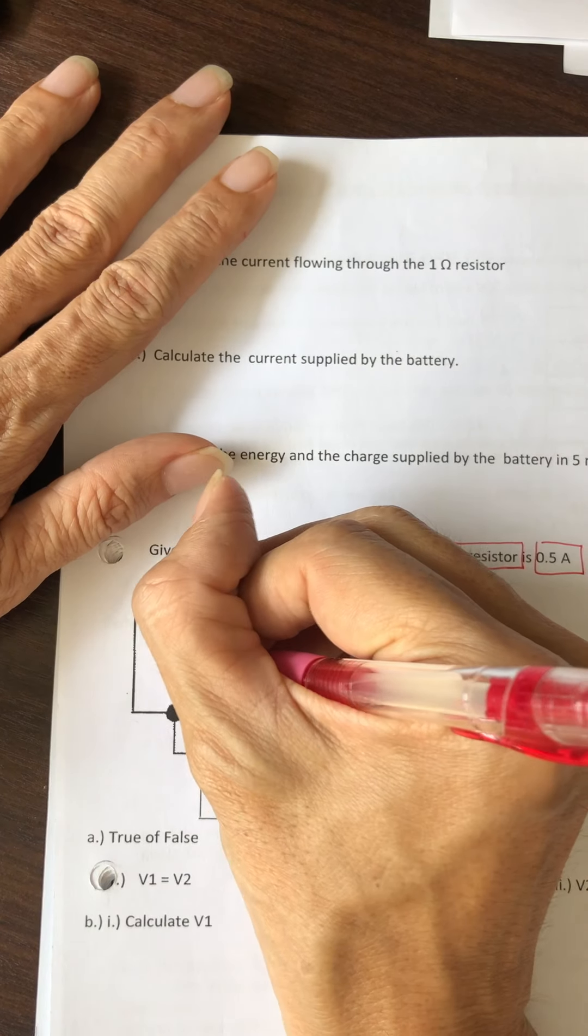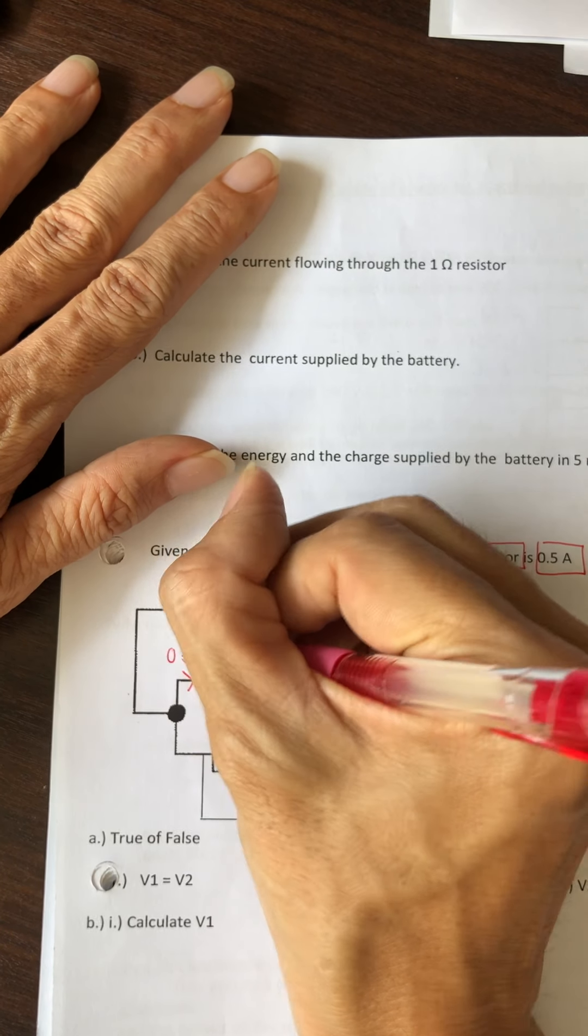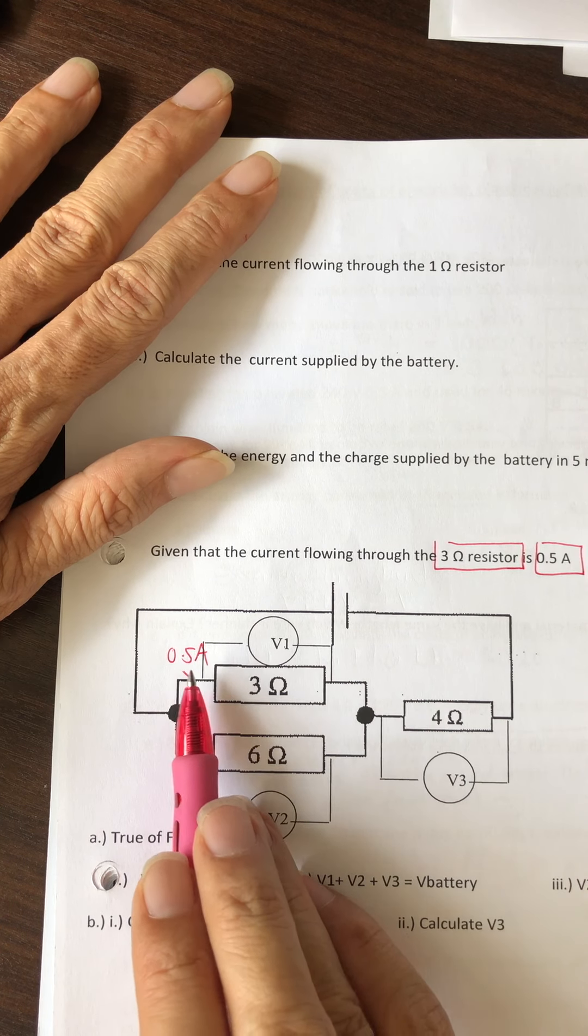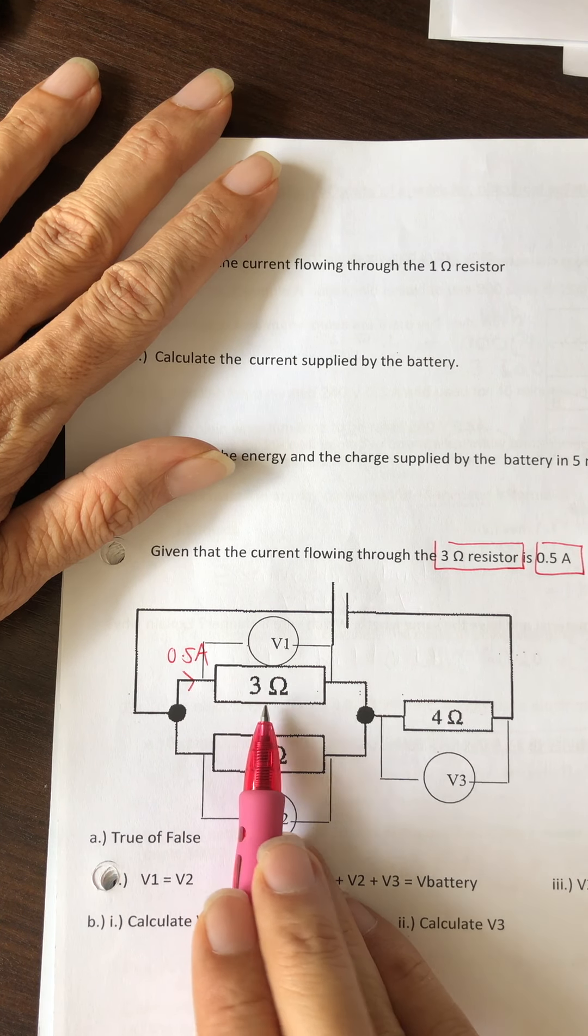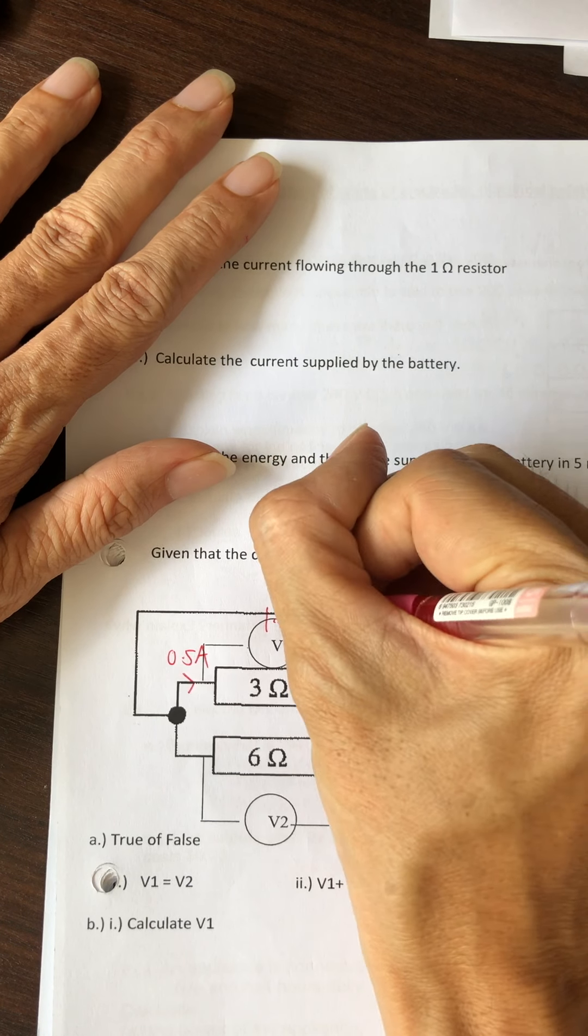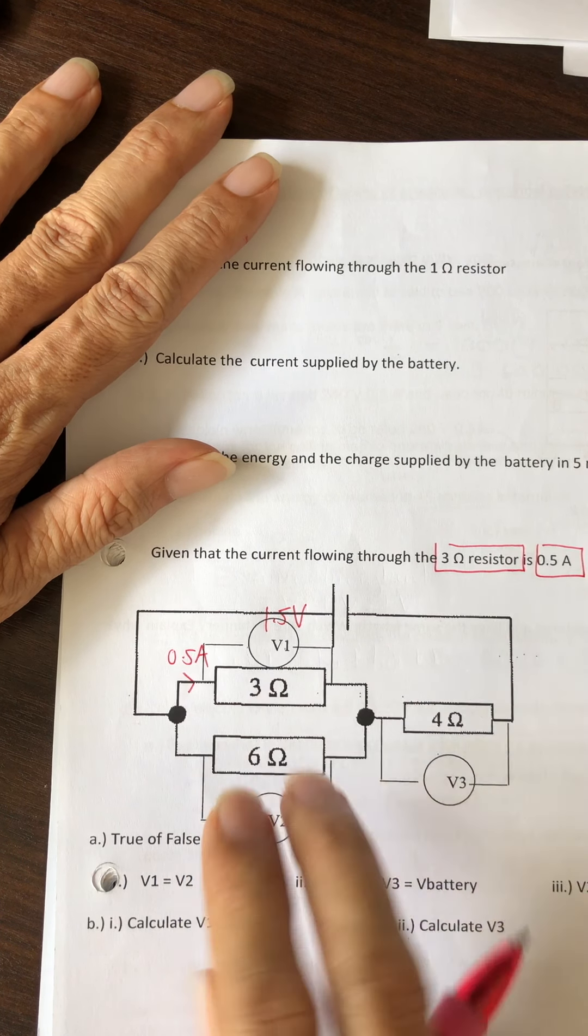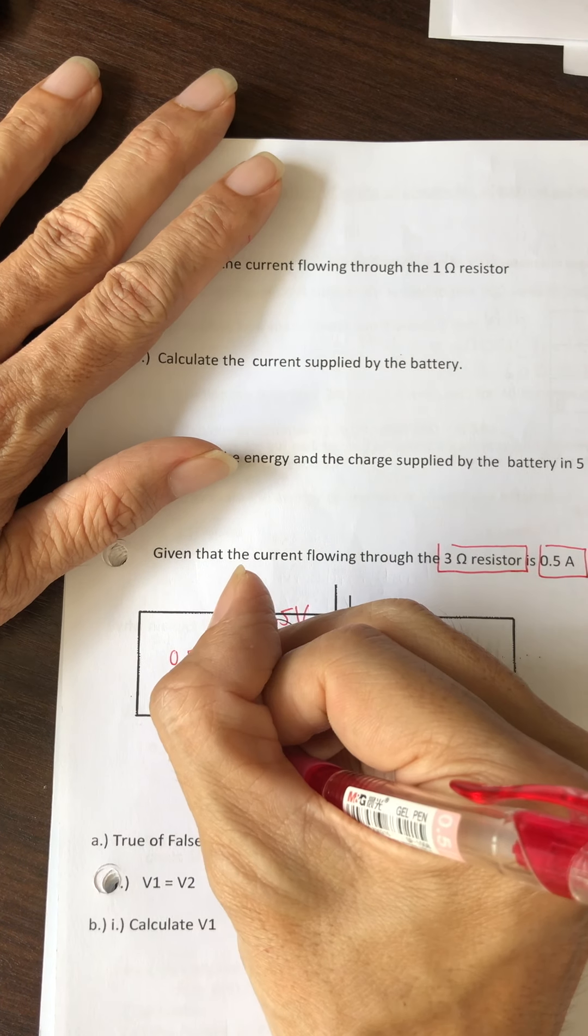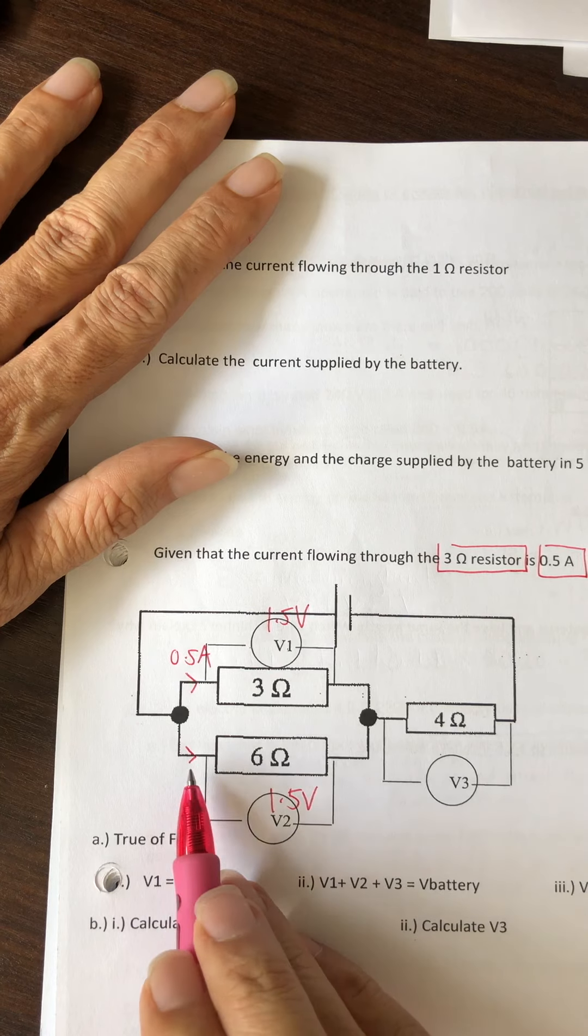Before even starting to solve the question, have a good clear understanding of what's happening in the circuit. It says the 3 ohm resistor has current flow of 0.5 amperes, so label it yourself - this helps. If you see 0.5 amperes here and 3 ohms, using IR this makes 1.5.